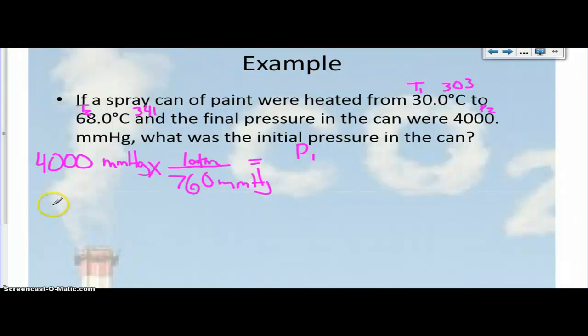That gives me a pressure of 5.26 atms. Now, we can just plug into our equation, so we have P1 T2 equals P2 T1. Our pressure 1, we don't know. Our pressure 2, I mean not pressure 2, but temperature 2 is 341. Alright, our pressure 2 was what we converted down here, this 5.26 atmospheres.